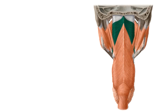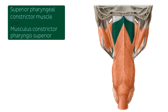The three constrictor muscles are nested within each other from the top down. A good way to visualize them is as three cone-shaped cups fitting within each other. The superior constrictor, seen here highlighted in green, fits into the middle constrictor, which in turn fits into the inferior constrictor found below.